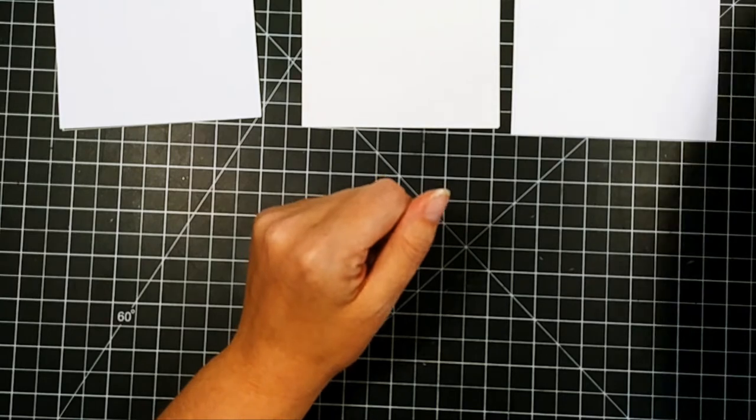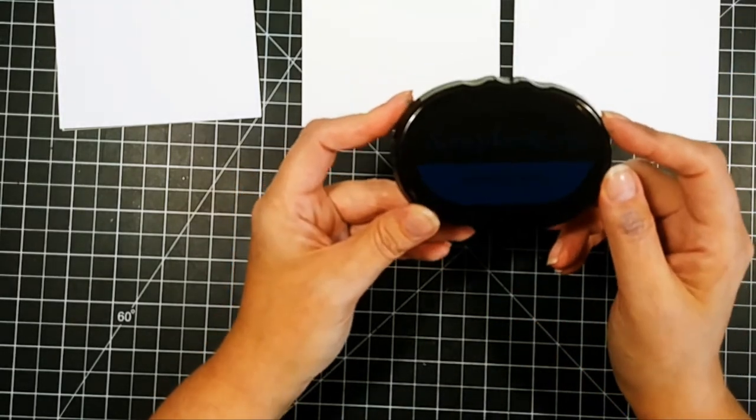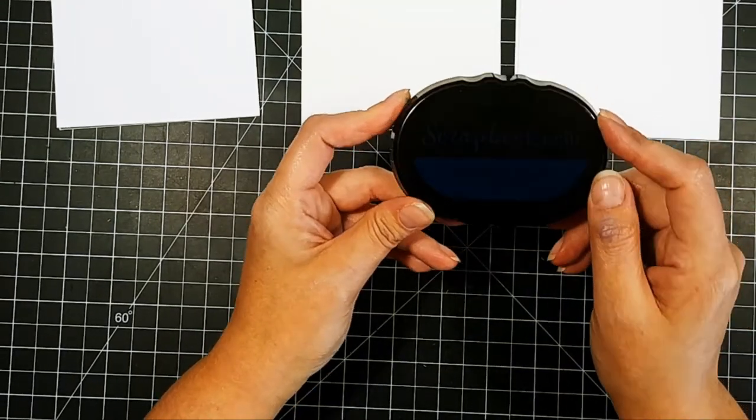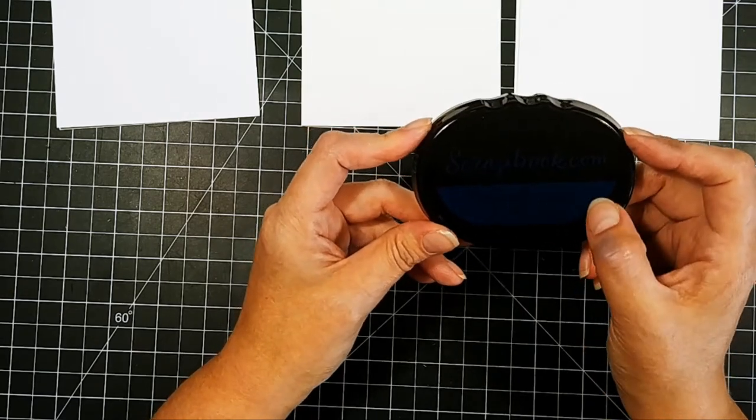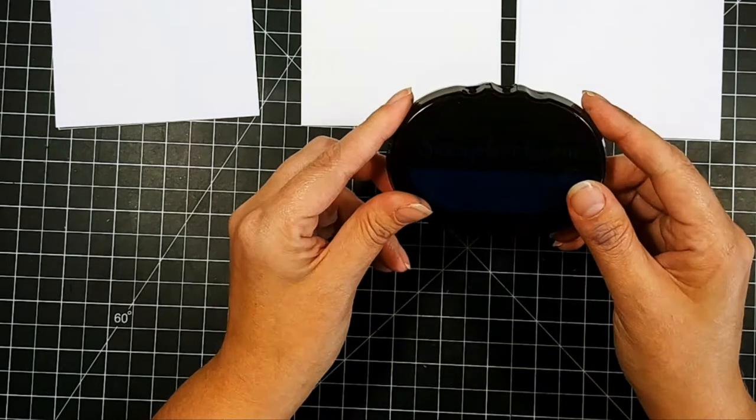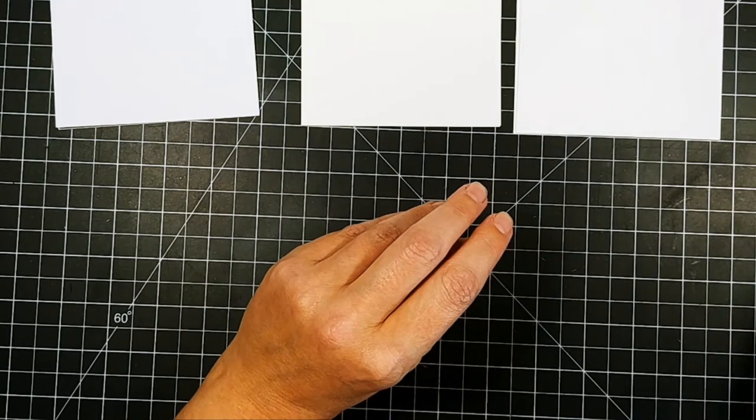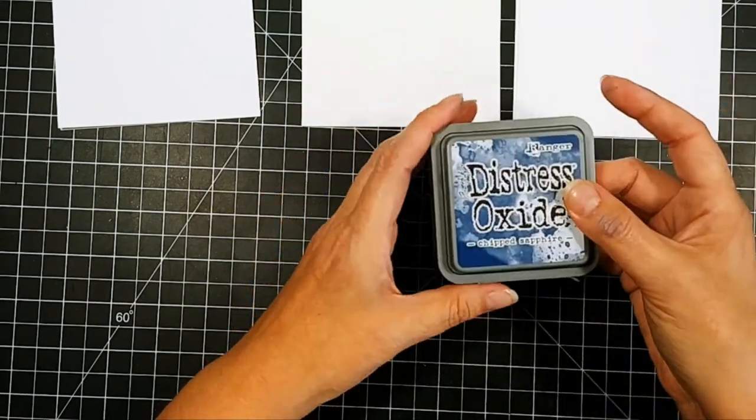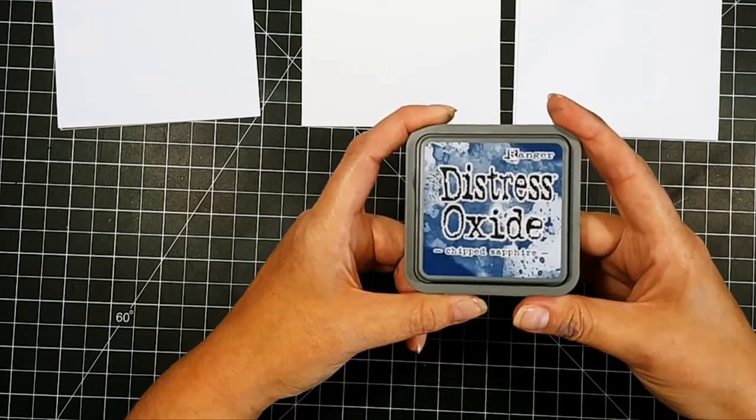Some of the inks we're going to be testing out today: I have scrapbook.com's midnight blue. I'm going to use blue for everything because it's a dark color and you can blend it down to a lighter color. This is a hybrid ink, so you would be able to use this with Copic markers. Then we're going to test out a Distress Oxide ink because this is more like a pigment ink.